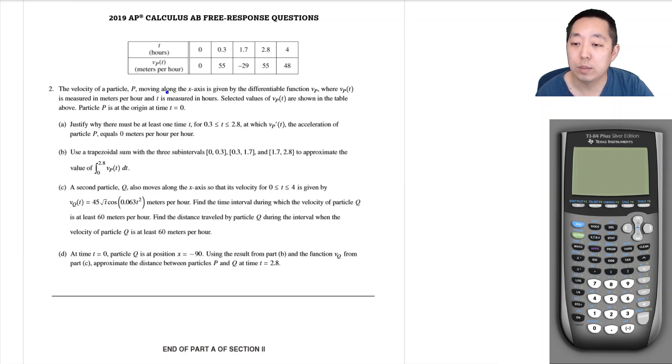The velocity of particle P moving along the x-axis is given by the differentiable function VP, where VP is measured in meters per hour and T is measured in hours. Selected values for VP of T are shown in the table above, and particle P is at the origin at time T equals zero.